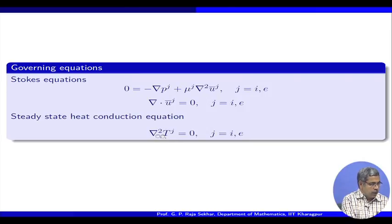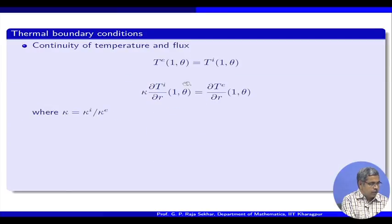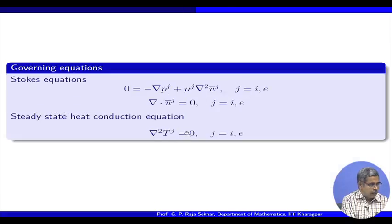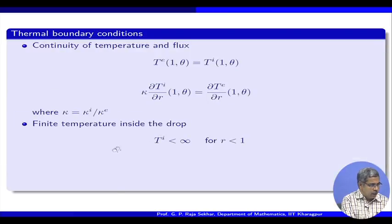Once we have steady heat conduction, we need the corresponding boundary conditions on the interface. The natural boundary conditions are continuity of temperature and continuity of the corresponding flux, where kappa is the corresponding ratio of thermal conductivities. Since we are assuming axisymmetric flow, we see only R and theta dependency — there is no phi dependency. Hence we get a separable solution of the Laplacian in the axisymmetric case, with the corresponding boundedness condition and far-field condition.